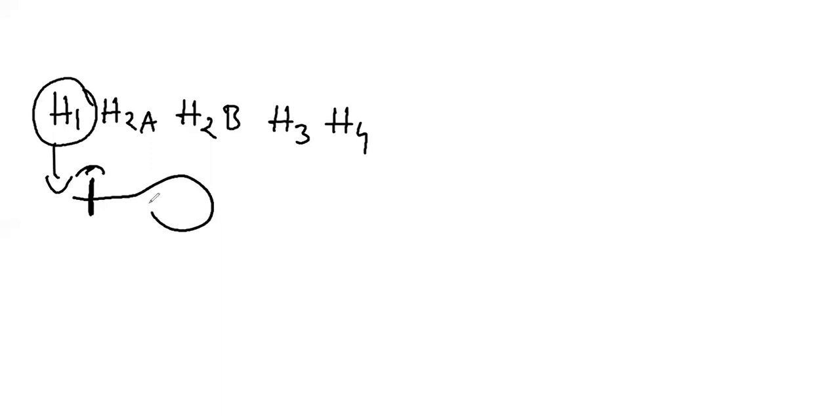Okay, so total five histone proteins: H1, H2A, H2B, H3, H4. So nucleosome. This is the linker histone starting here. You can see the linker histone starting here. You can see the linker histone here.